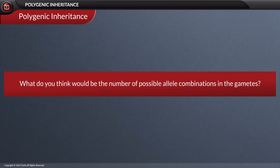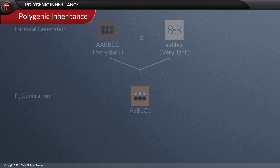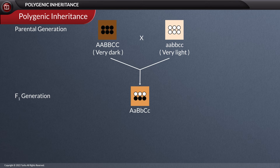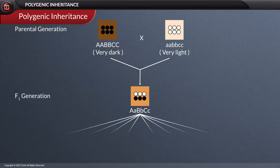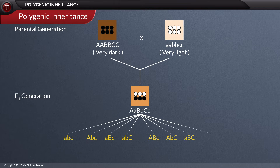What do you think would be the number of possible allele combinations in the gametes? The number of possible allele combinations in the gametes is eight, including ABC, ABc, AbC, Abc, aBC, aBc, abC, and abc.